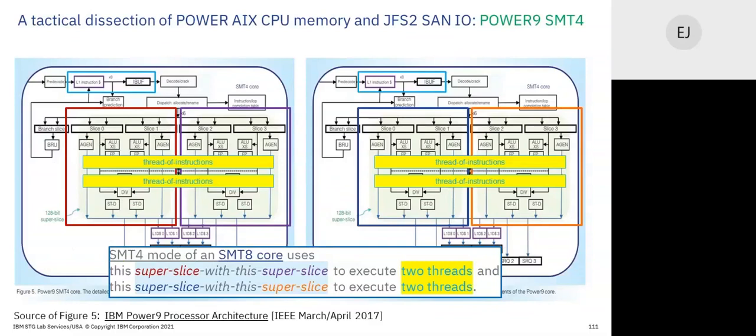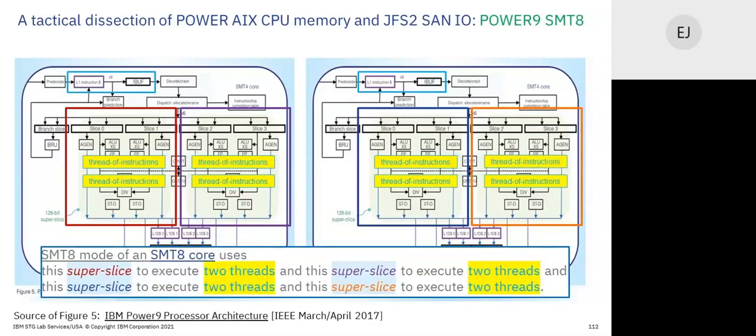SMT4: two threads across two super slices — when one thread stops on an L3 miss, the other thread keeps running. That's what throughput is about. SMT8: two threads per super slice — very high throughput because all the core is ever absolutely busy and you have eight concurrent streams prefetching on eight threads. The ranges are 33 to 70 for OLTP and 70 to 95 for batch.